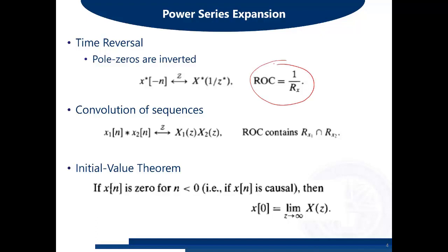The next one is convolution of sequences. This is a very important property. Convolution of sequences means that if you have two time domain sequences and you convolve x₁ and x₂ in the time domain, it is similar to performing multiplication in the frequency domain. The ROC will contain the intersection of both the original ROCs of x₁ and x₂.